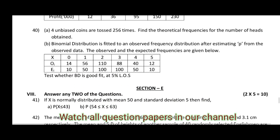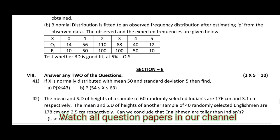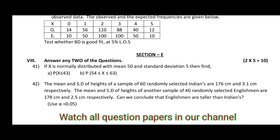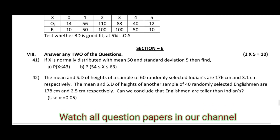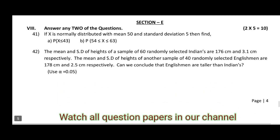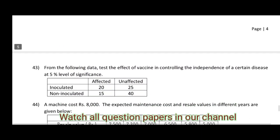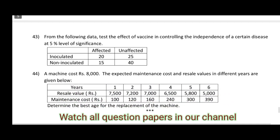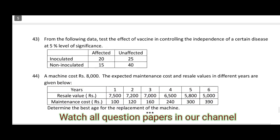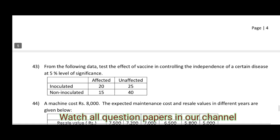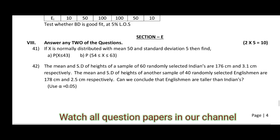In Section E, answer any 2 of the questions. Here each question carries 5 marks. Questions 41, 42, 43, and 44 — also 4 questions — and you have to write only 2.